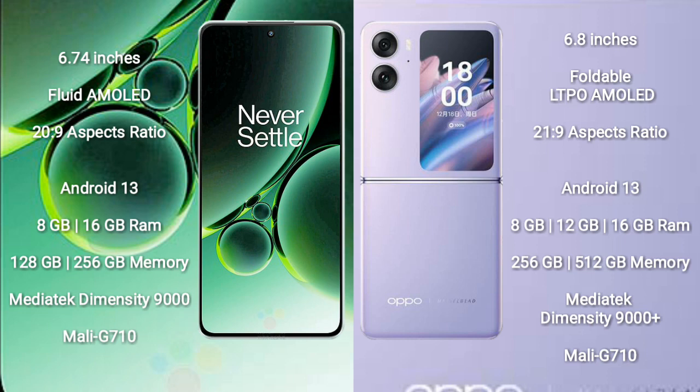The OnePlus Nord 3 features the MediaTek Dimensity 9000 processor with GPU Mali-G710. The Oppo Find N2 Flip comes with 8GB, 12GB, or 16GB RAM and 256GB or 512GB internal storage, powered by the MediaTek Dimensity 9000 Plus processor with GPU Mali-G710.